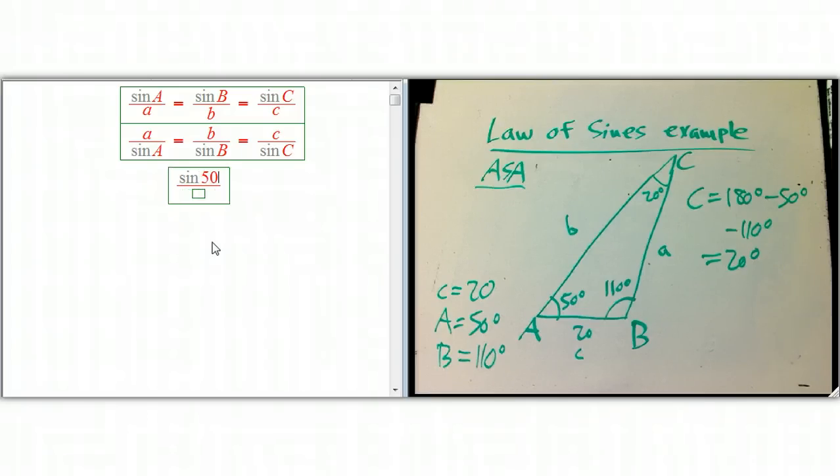So let's put stuff in. Sine of 50 degrees over a, that's the unknown we want to get, is sine of C, and that's why we really wanted to get that C, so we could put that in there, over 20. Okay. So, and again, if we had started with this version, this next step would be slightly easier, but it's not a big deal. Let's just cross multiply.